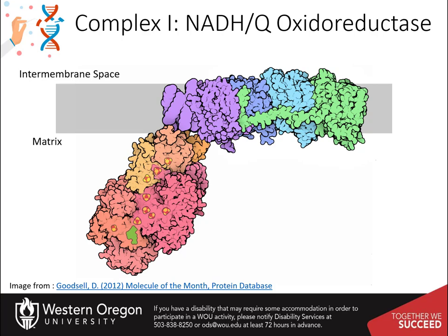Remarkably, the structure reveals that each of these protons is transported by a dedicated protein pump. Complex I has a chain of transporters, all arranged in a row. The final transporter in the chain, colored green here, has a tail that reaches back and links all the transporters, and is thought to synchronize the electron transport reaction with the proton pumping cycle in all four transporters.